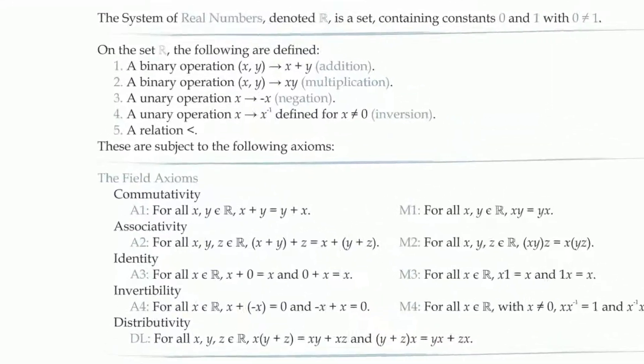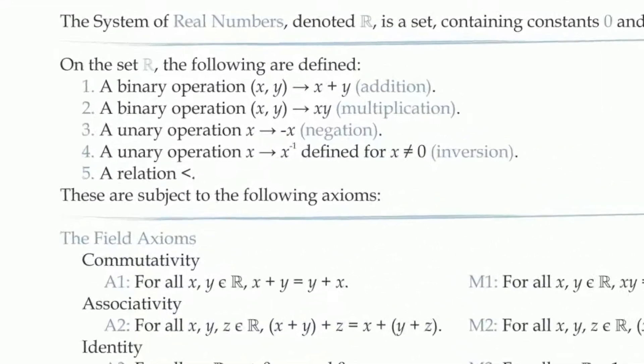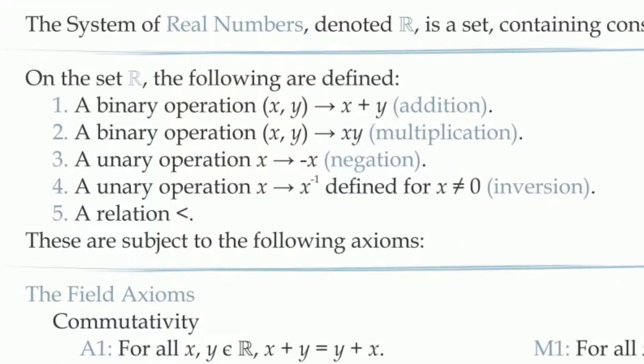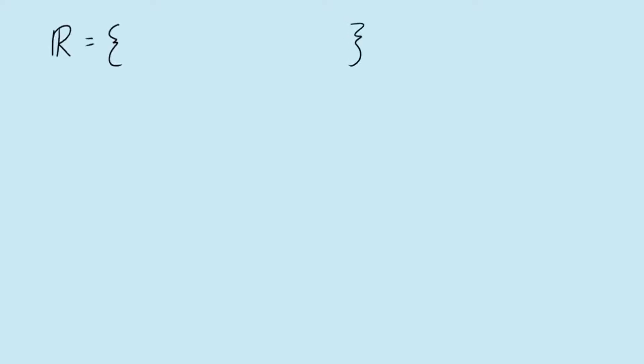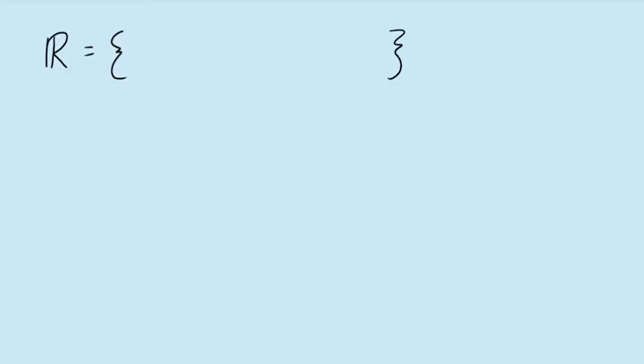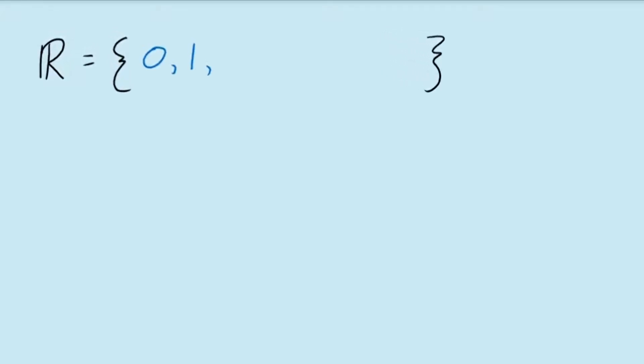To begin, when we say the real numbers are a set, what we mean is that we're viewing the real numbers as a collection of objects. Those objects are the individual numbers themselves, such as 0, 1, negative 1, 2, one half, and so on. This means we're viewing the real number system as the collection of all of these.